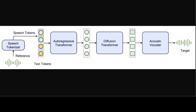They demonstrated that this variant achieves comparable performance to the language model variant in both objective and subjective evaluation and showcases its effectiveness in speech editing. Looking at the architectural pipeline: first, the speech tokenizer learns tokens from reference speech; then the autoregressive language model generates speech tokens based on the conditioned text and speech; then the diffusion transformer generates continuous speech representations in a coarse-to-fine manner; and finally the acoustic vocoder yields higher quality speech from the diffusion output.